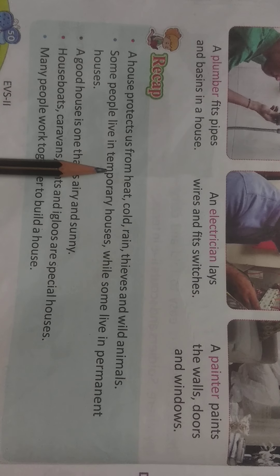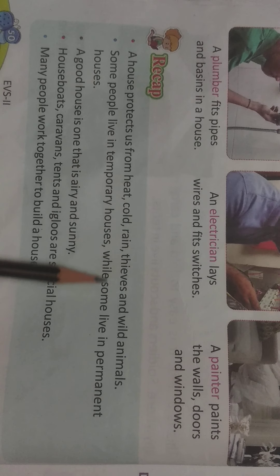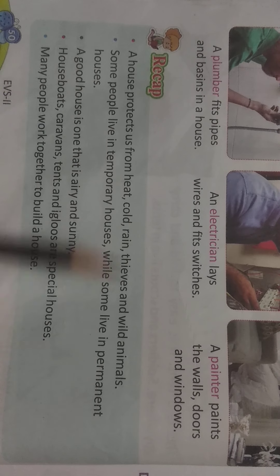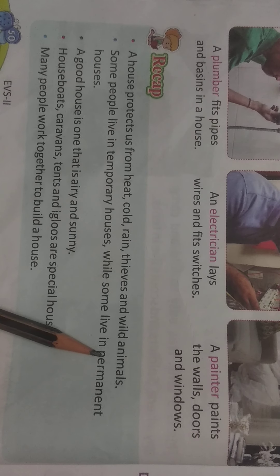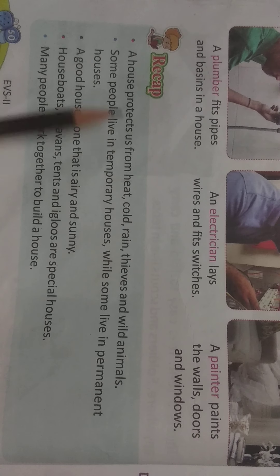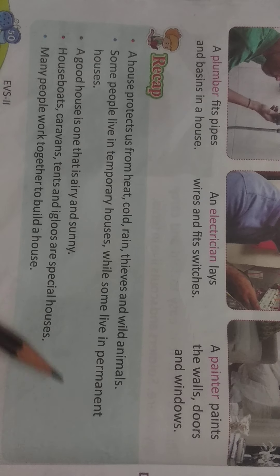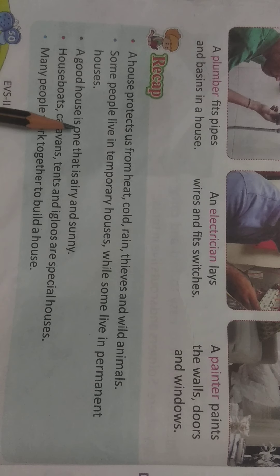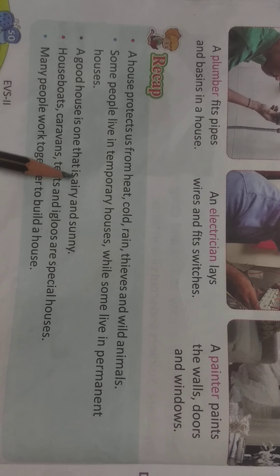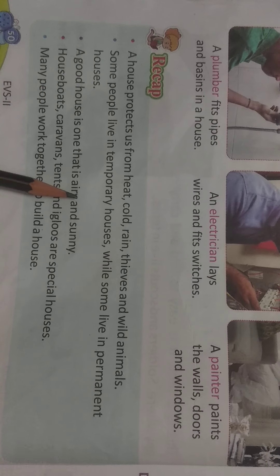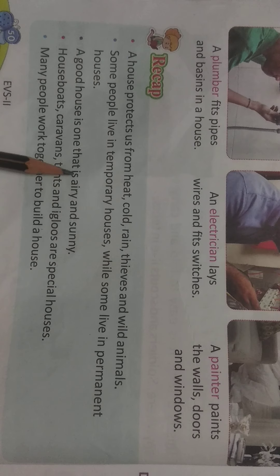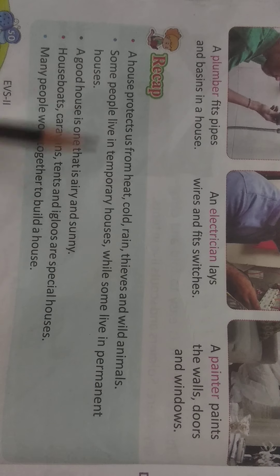Some people live in temporary houses like herds and tents, and some people live in permanent houses like bungalows, multi-story buildings, and skyscrapers. A good house is one that has good air circulation and sunlight passing through it properly.